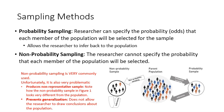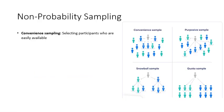Non-probability sampling methods are things you'll see all the time. The first and most common is convenience sampling — selecting participants who are easily available. For example, if we wanted a sample of Diné College students and we just caught people entering the cafeteria, those people are convenient but they don't represent all Diné College students, so we have a biased sample.